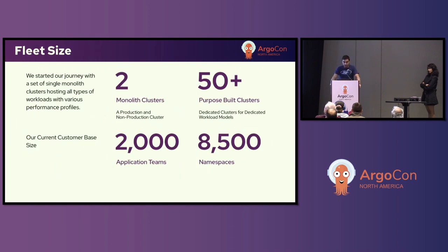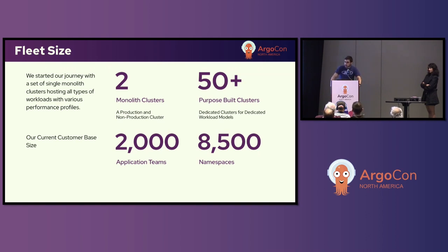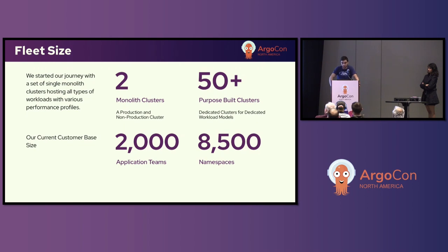Our current fleet size is about 50 clusters with 2,000 application teams split across about 8,500 namespaces — prod, non-prod, CI/CD namespaces, and so on. With OpenShift 4.14 around the corner, we have to essentially rebuild every cluster, so we'll be immediately doubling our footprint as we migrate people from one cluster to the new cluster. With the decommission of other legacy platforms, we should be seeing a 2 to 3x growth in the next one to two years in terms of our footprint size.